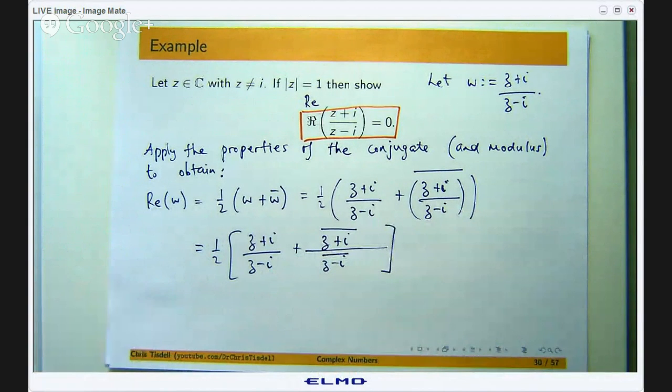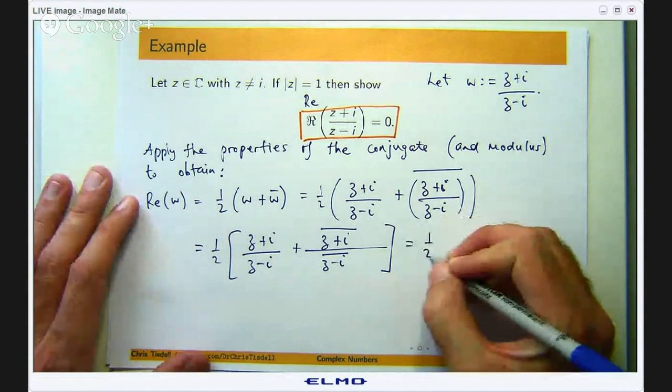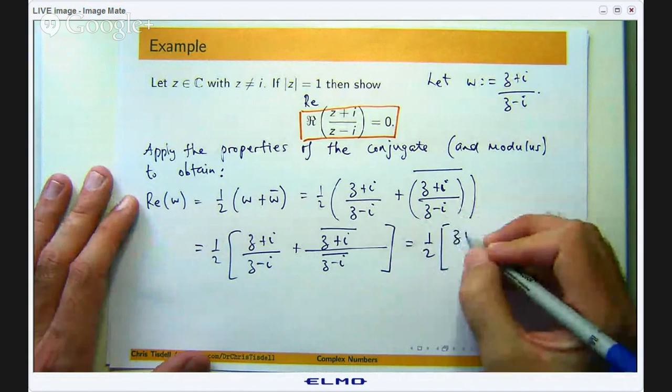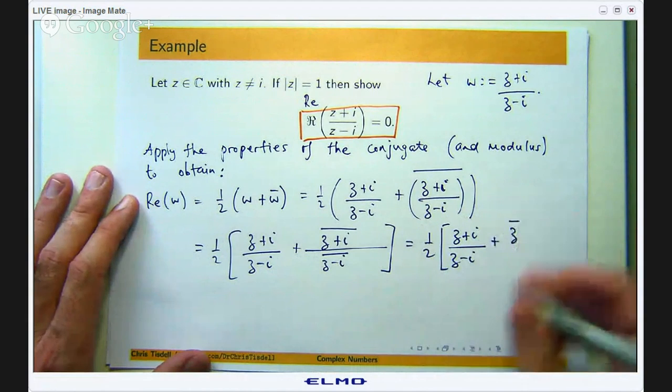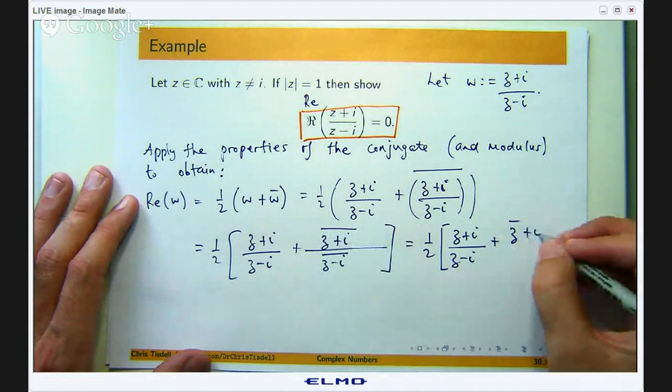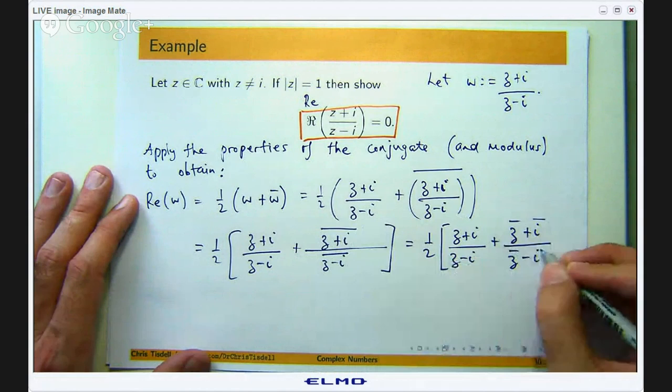Okay so I have got a quotient of the conjugate of a sum here and a conjugate of a difference. Well I know from the previous little table that I showed you I can break this up to be sums of conjugates and differences of conjugates. Okay so the top bit will become z bar plus i bar all over z bar minus i bar.